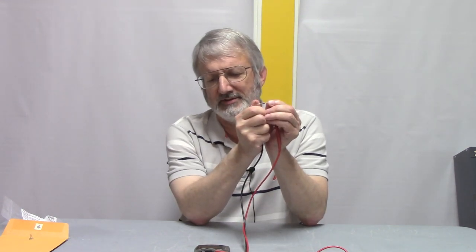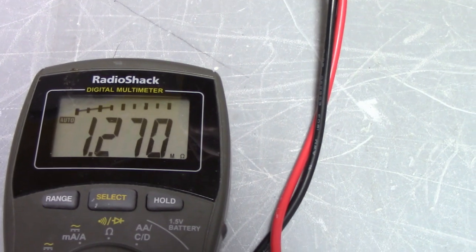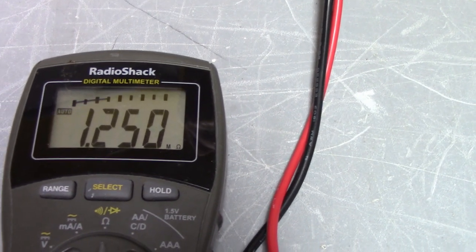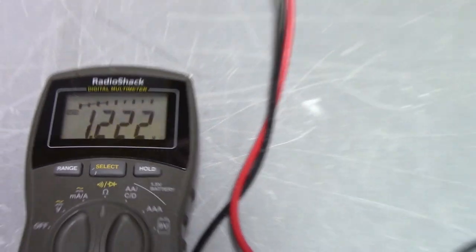Let's read what the meter says. The meter thinks that this resistor is 1.27 mega ohms. But we said it's supposed to be 3 megs.